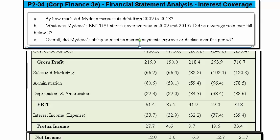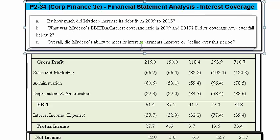Now we need to tackle Part B, which asks what was MyDeco's EBITDA divided by interest coverage ratio — you could just call it the EBITDA to interest coverage ratio. What was it in 2009 and in 2013, and did the coverage ratio ever fall below 2.0?